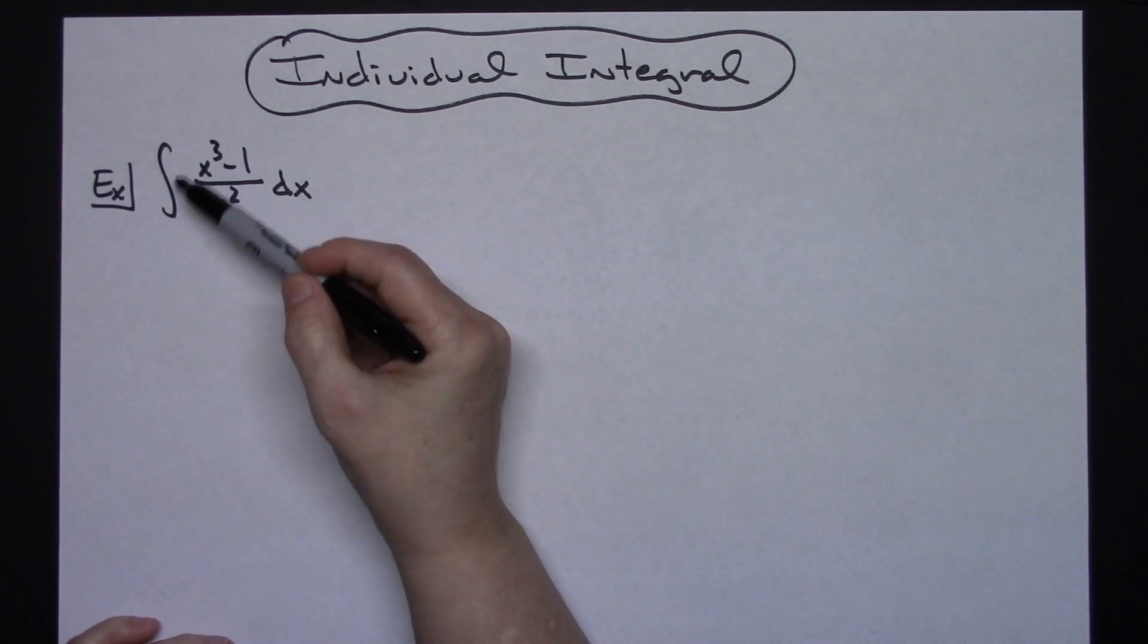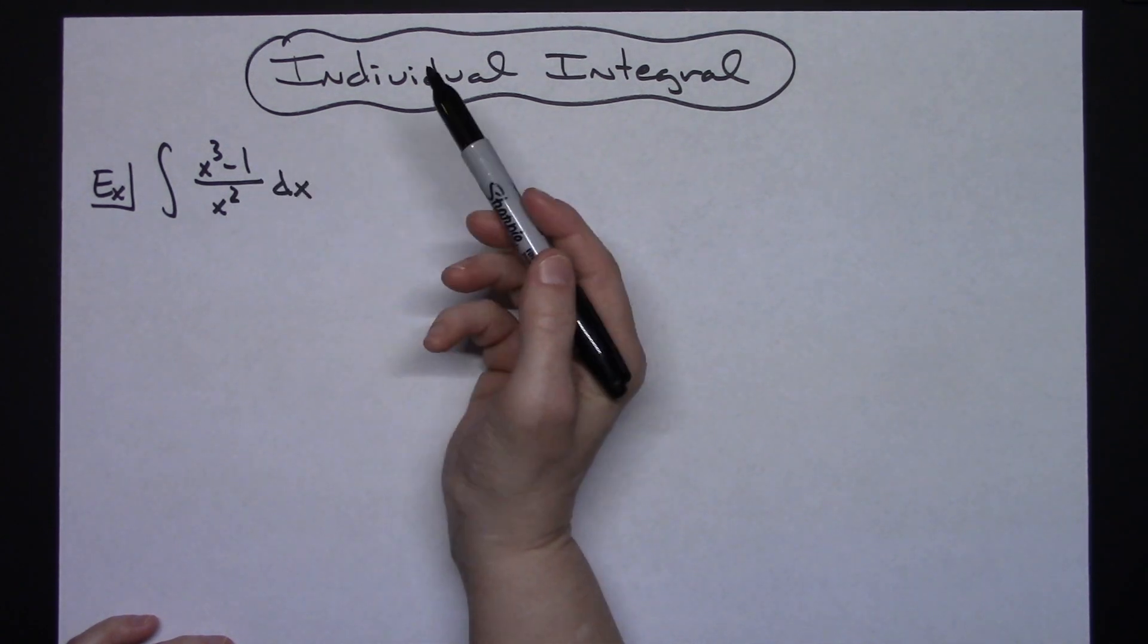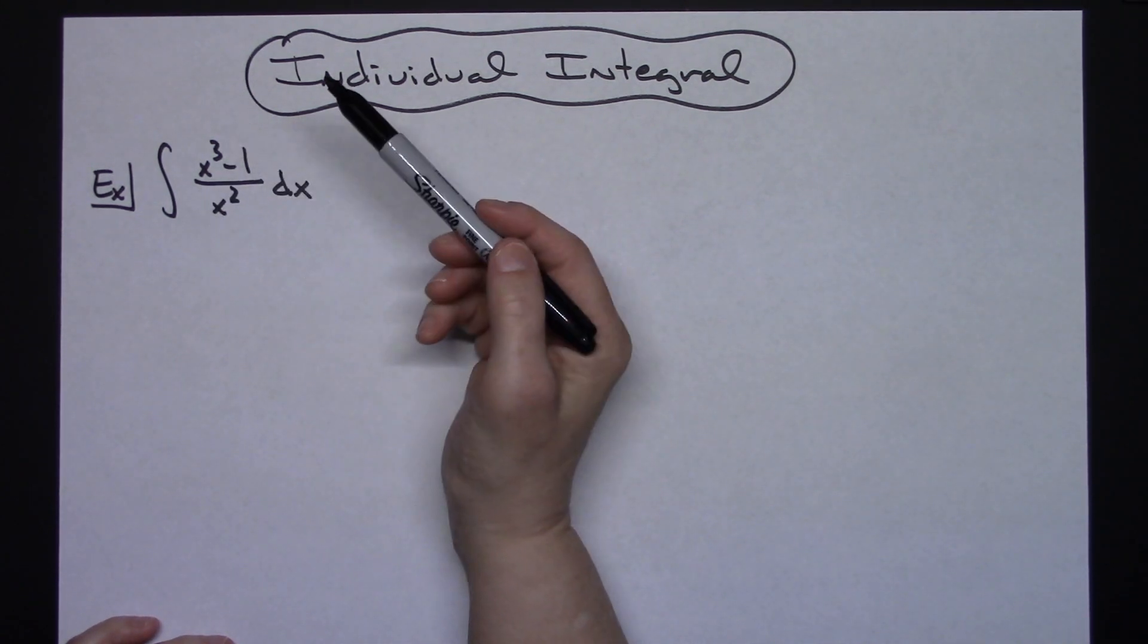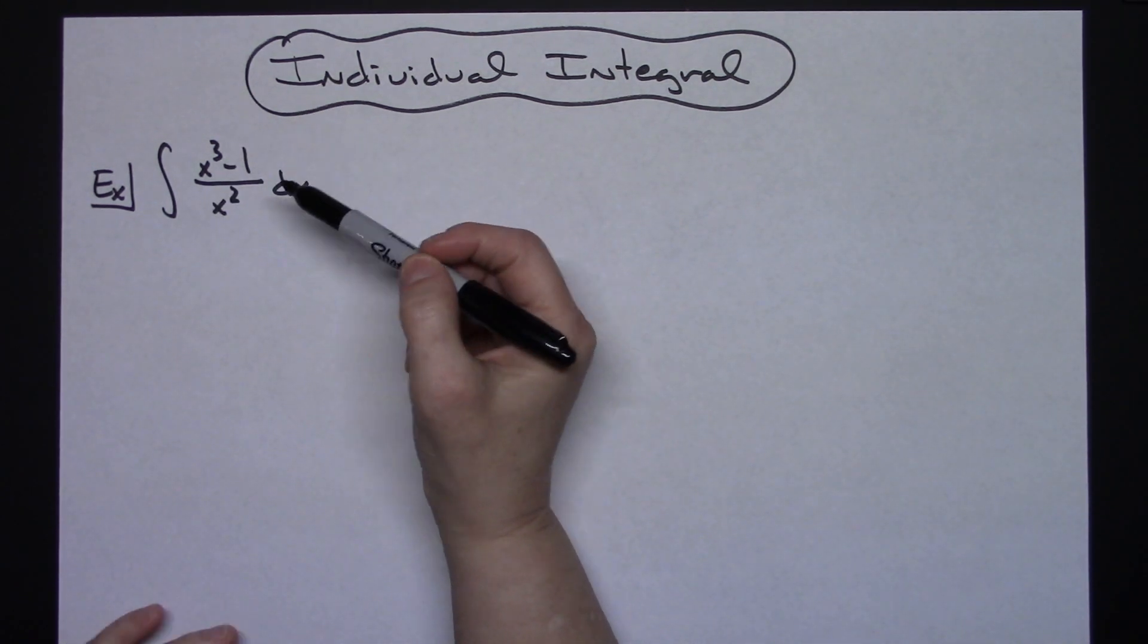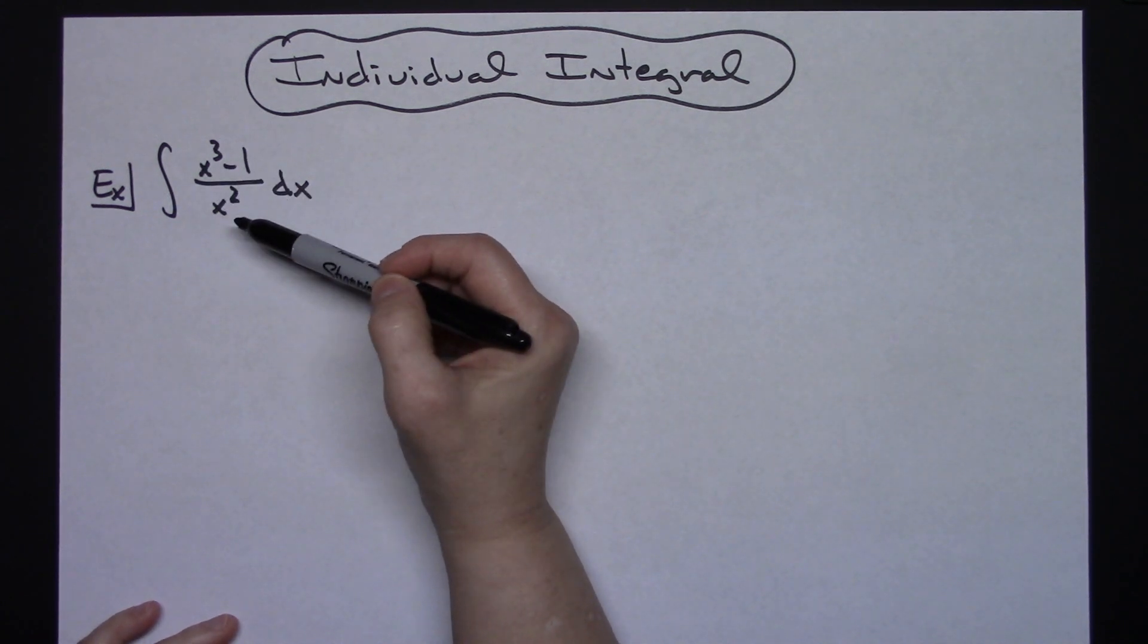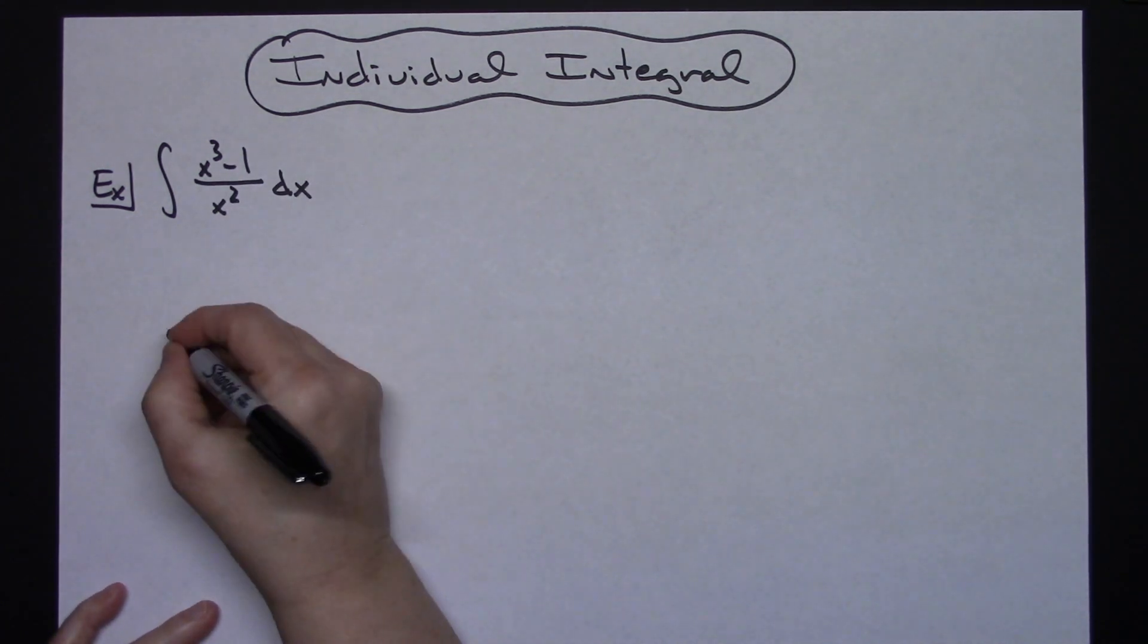My integral here is x to the third minus 1 all over x squared. It is a polynomial. About the easiest way to do this is just to take this polynomial, especially since it is so small, and just do some long division.